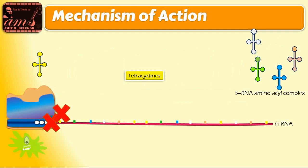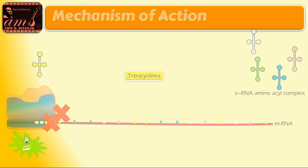Thus, tetracycline inhibits the bacterial protein synthesis and inhibits its growth. It is a bacteriostatic drug.